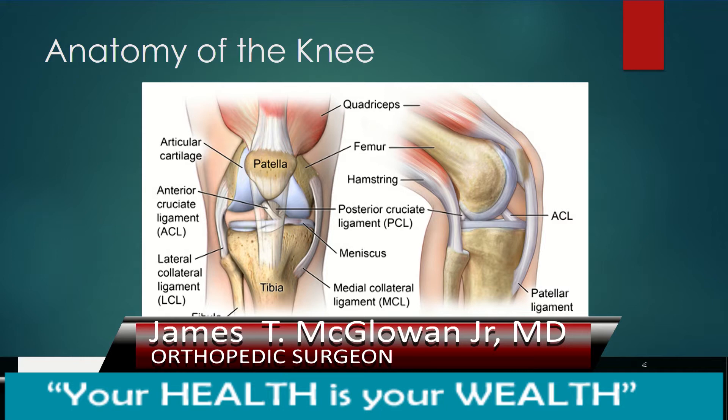The knee joint itself is stabilized by lateral and medial collateral ligaments. The internal anatomy of the knee is stabilized by an anterior and posterior cruciate ligament that actually crosses over — the front part being the anterior cruciate ligament, the back part being the posterior cruciate ligament. The ACL stabilizes the knee in extension; the PCL stabilizes the knee in flexion.